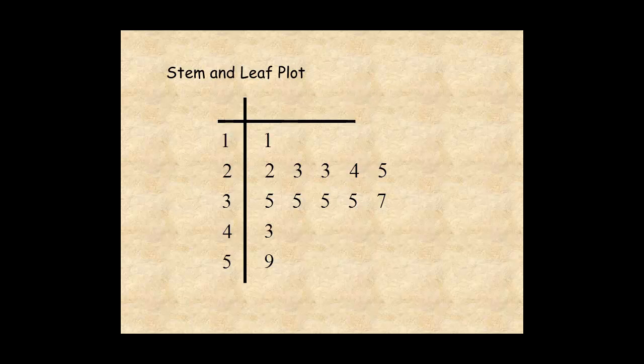A stem and leaf plot is a way of organizing data in a form that makes it easy to see the frequency of the different types of data.